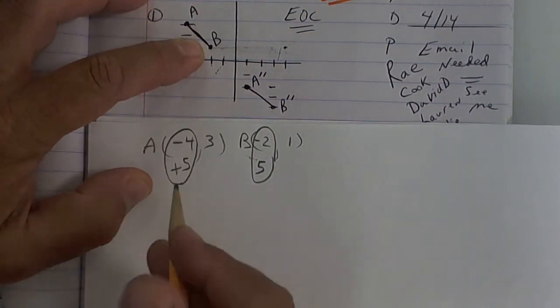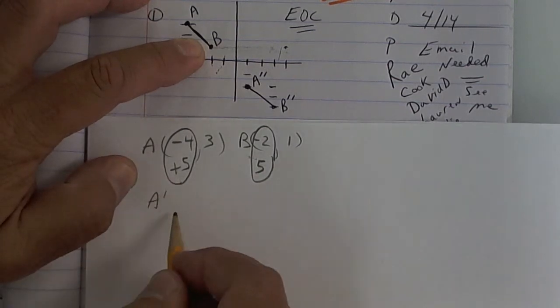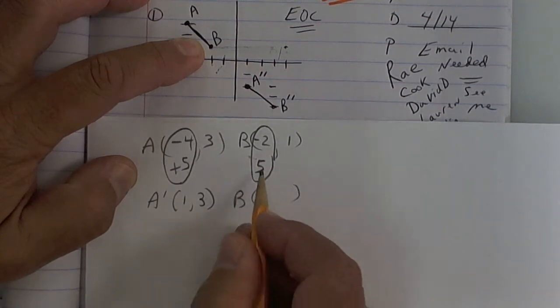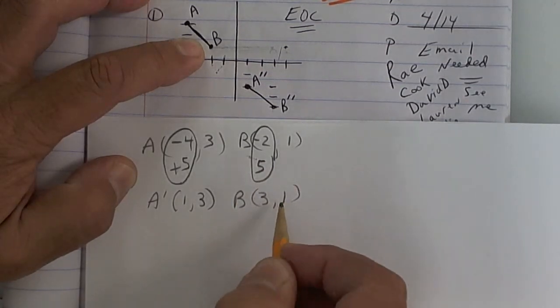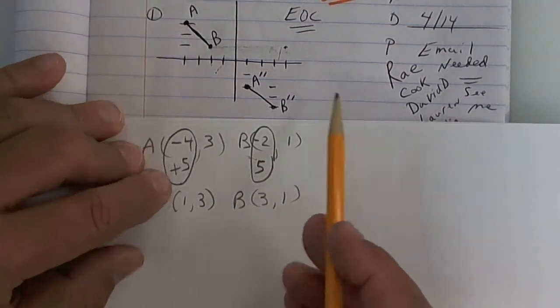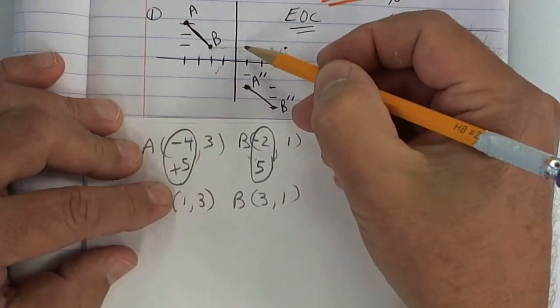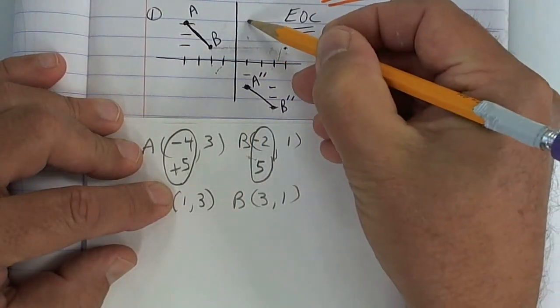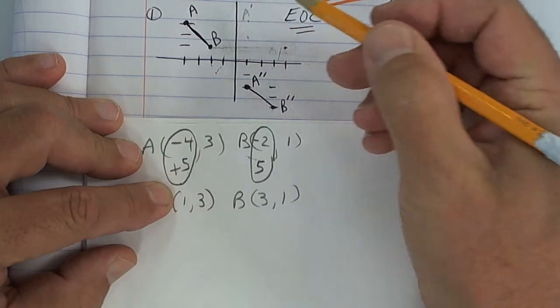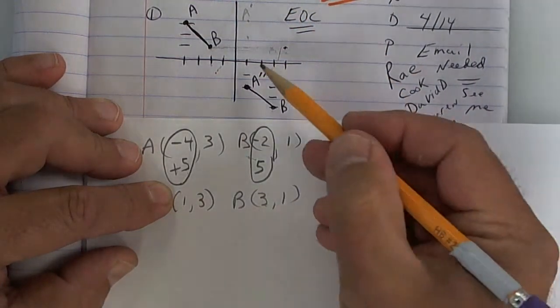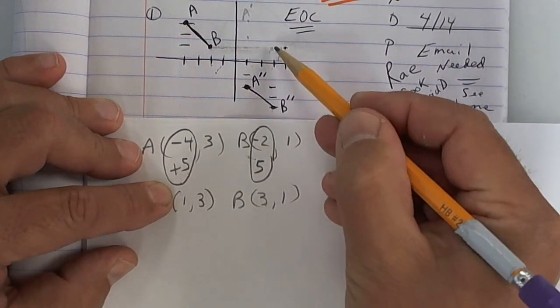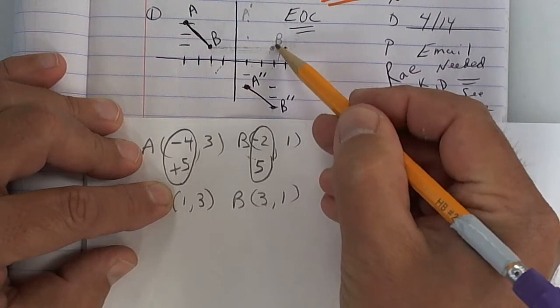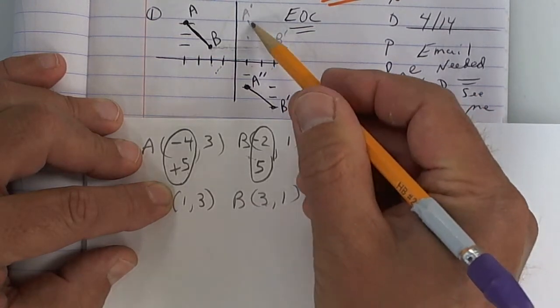And that's going to give me my answer. So when you change it by 5, the new point, A prime, should be 1 and 3. B should be 3 and 1. Let's check it. Over 1, up 3, A prime. And then over 3, up 1, B prime. And if you draw that, you have the answer.